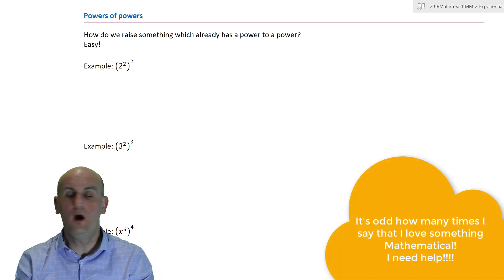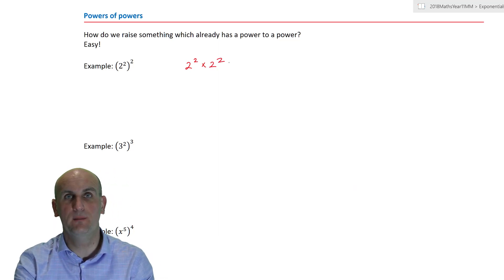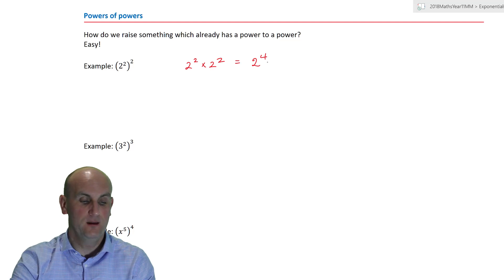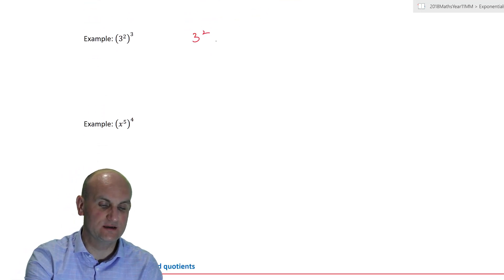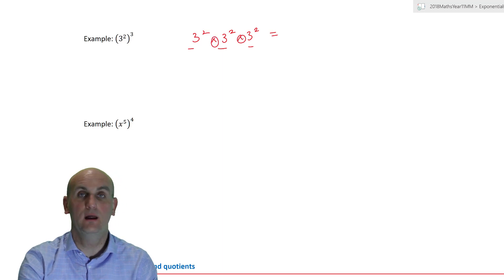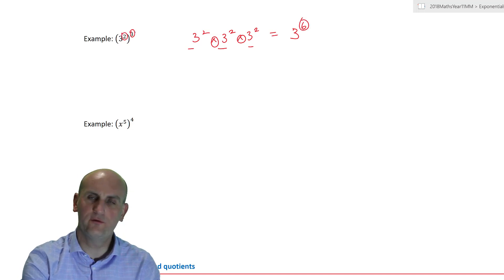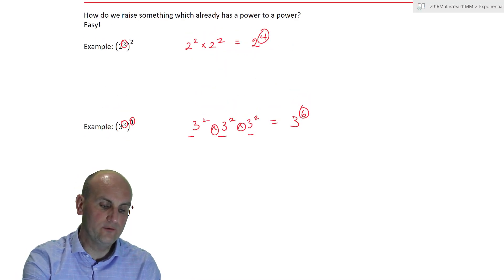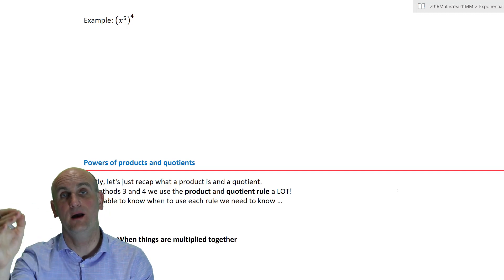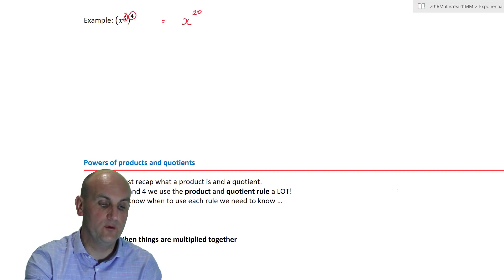One of my favourites is powers of powers. Look at two squared, all to the power of two. That's two squared times two squared, which equals two to the power of four — we added the indices. What about three squared to the power of three? That's three squared times three squared times three squared, giving three to the power of six. Notice: two times two is four, and two times three is six. When you have a power of a power, you multiply the powers together. So x to the power of five, all to the power of four, becomes x to the power of twenty.